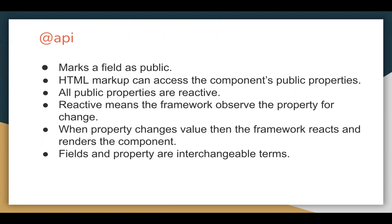If you are placing your Lightning Web Component on a page — for example, on the account record page — and you want to get the account record ID automatically in the Lightning Web Component, you will use @api with the property name so that property can fetch data from outside the Lightning Web Component. To make a field or property public, you use the @api decorator, and then HTML markup can access the component's public property.